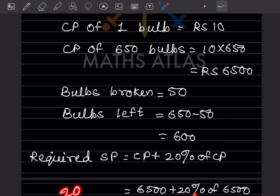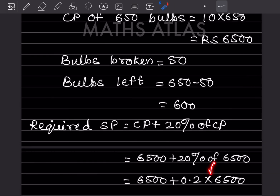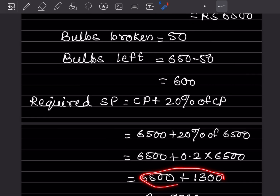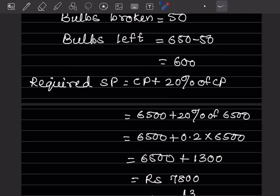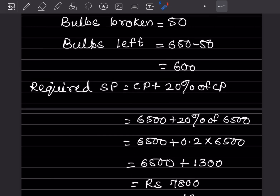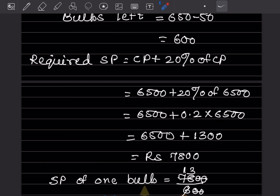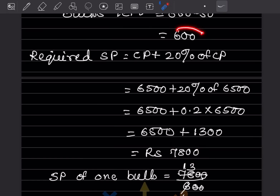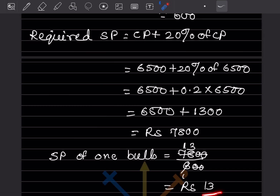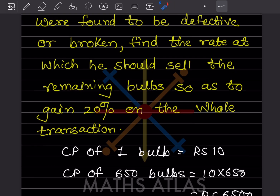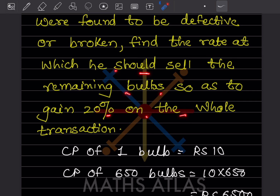20% of 6500 = (20 ÷ 100) × 6500 = 0.2 × 6500 = ₹1300. So total required SP = 6500 + 1300 = ₹7800. Since only 600 bulbs are left to sell, SP per bulb = 7800 ÷ 600 = ₹13. So the selling price per bulb should be ₹13 to gain 20% on the whole transaction.